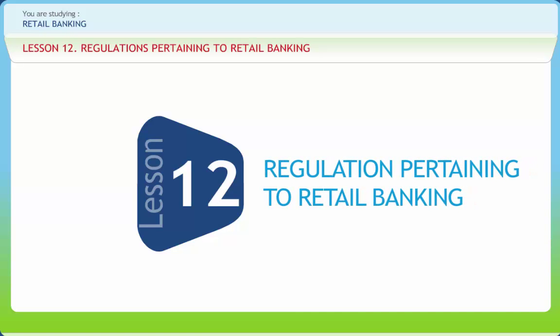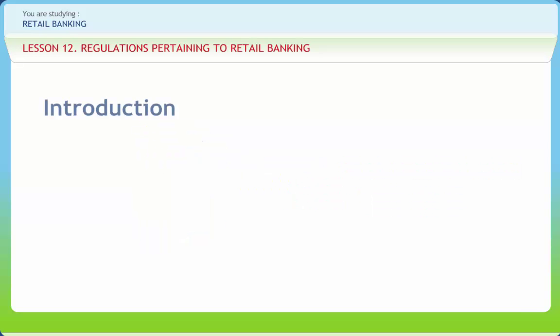Regulations pertaining to retail banking. Banks that mobilize and allocate savings efficiently, allocate capital to endeavors with the highest expected social returns, and exert sound governance over funded firms foster innovation and growth. RBI supervises and gives guidelines to all other banks operating in India in order to ensure better banking facilities and the growth of the economy.